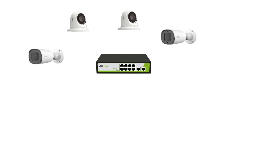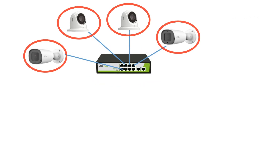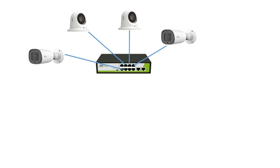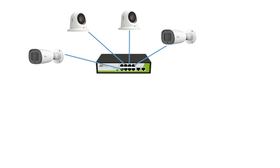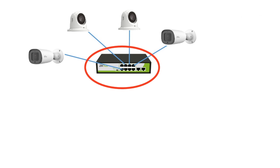The next thing to do is to plug network cables from the ports of the PoE switch into each camera. With these connections done, power will be transmitted from the PoE switch through each of the network cables into each camera. And at the same time, through the same network cables from each camera, videos captured by the cameras will be transmitted into the network switch.